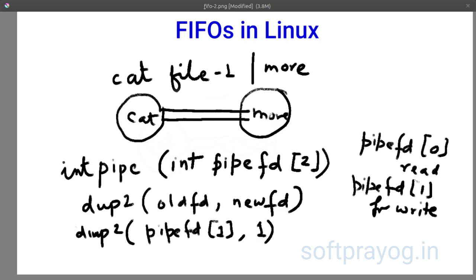So after this, the file descriptor 1 that is a standard output and pipefd1 refer to the same file descriptor. So once you create the cat process it writes on 1 the standard output but actually it is writing on pipefd1.